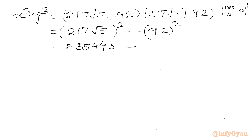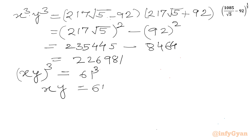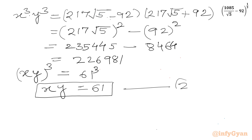So this equals 217 root 5 squared minus 92 squared. That is 217 squared times 5, minus 8464. This difference comes out to 226981, which is the cube of 61. On the left-hand side we have (xy) cubed. Taking the cube root of both sides gives us xy equal to 61.